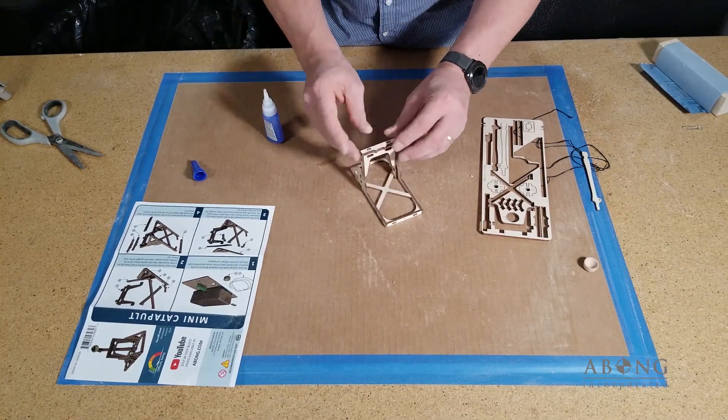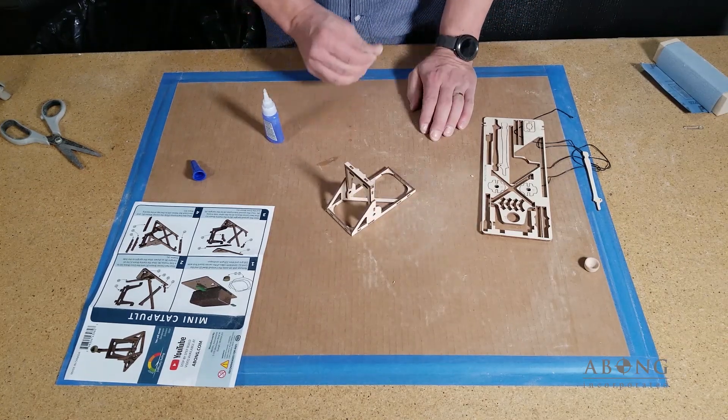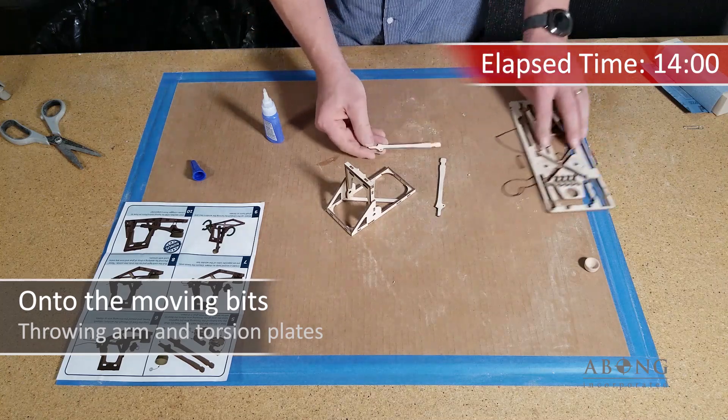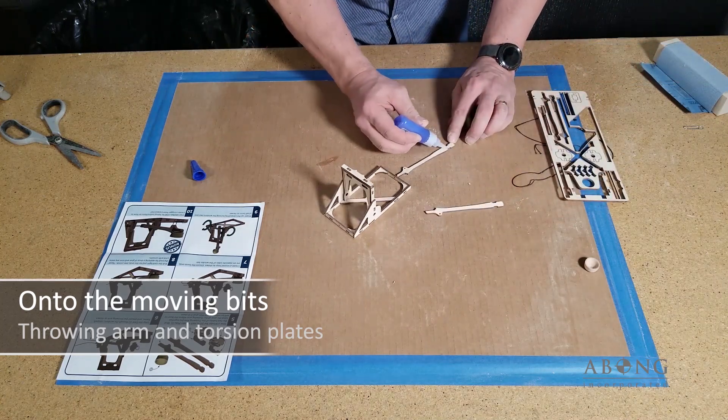So there I've got both pieces on. Everything's done and the base is pretty much done. So we can move on to the throwing arm now. We're about 15 minutes in or 14 minutes in.